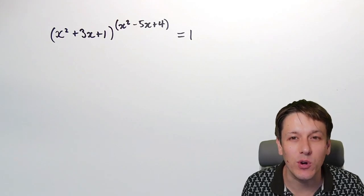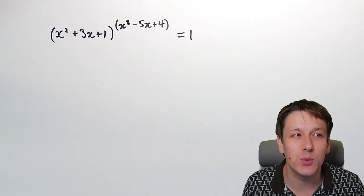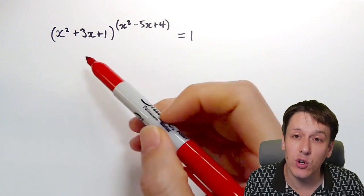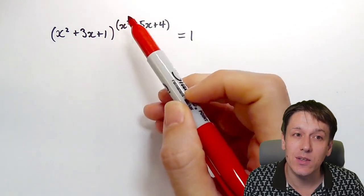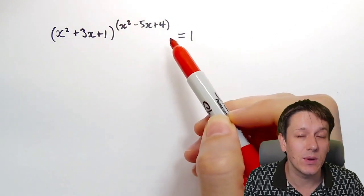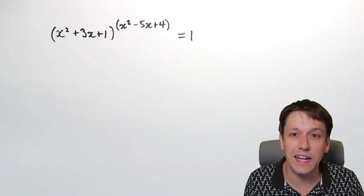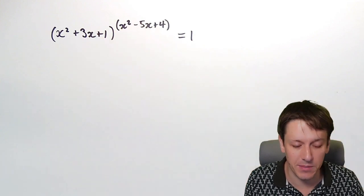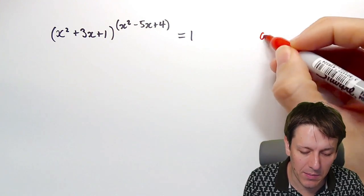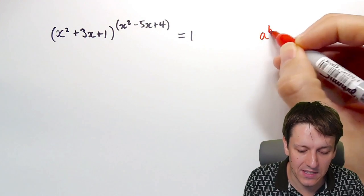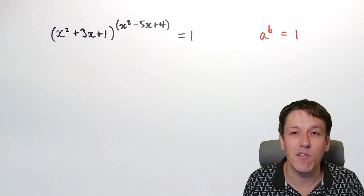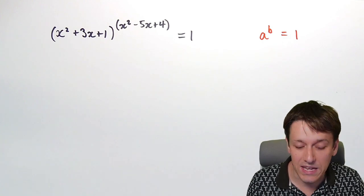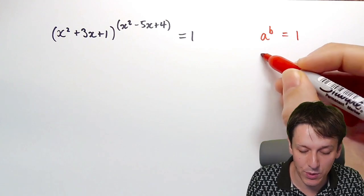This is a tricky little problem. We've got a quadratic to a quadratic equals 1 — effectively just some value to some other value equals 1. Once I've chosen values of x, I'll just have a number to another number equals 1. So if we think about all the different cases where we can have a to the power of b equals 1, there are really three cases we can have here.